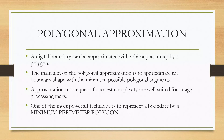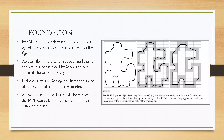One of those techniques is the minimum perimeter polygon technique. Here we can observe an object boundary. In the minimum perimeter polygon technique, the object boundary should be concatenated by the cells as shown in the figure. Assume the boundary of the object as a rubber band. As the rubber band shrinks, it is constrained by the inner and outer walls of the bounding region. Ultimately, this shrinking produces the shape of a polygon of minimum perimeter.